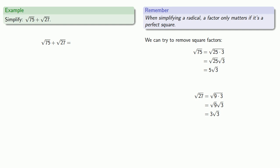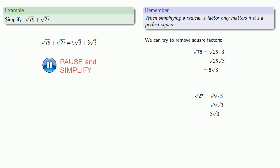Equals means replaceable, so instead of square root of 75, I'll write 5 square roots of 3, and instead of square root of 27, I'll write 3 square roots of 3. Now our radicands are the same — they're both square roots of 3 — so I can add: 5 and 3 square roots of 3 are a total of 8 square roots of 3.